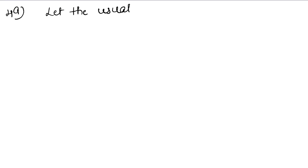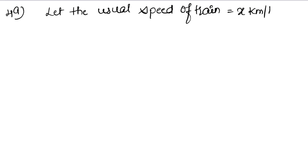If we don't know its usual speed, then let the usual speed be x km per hour. The usual speed of the train is x km per hour. The distance covered is 300 km.